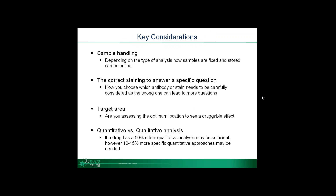I'd like to take you through some of the key considerations we think about to ensure the best targeted, high-quality histology to meet individual project needs. In general, these fall into one of four categories: sample handling — how we're fixing and storing samples — the best staining decisions in terms of antibodies versus histological stains, the target area and choosing your right region of interest, and finally how you're going to quantify all that information.